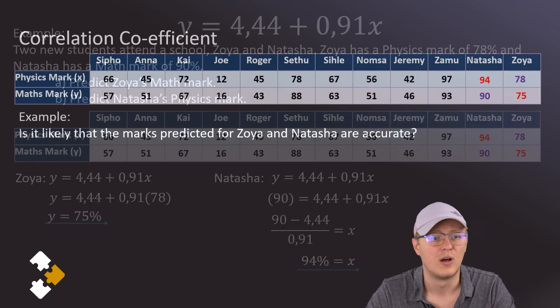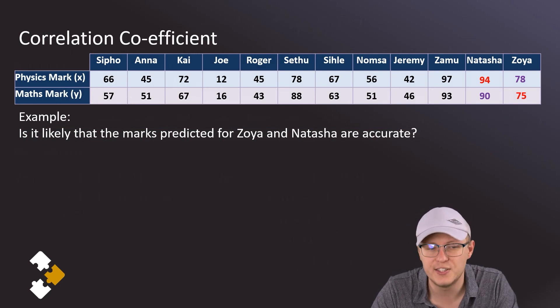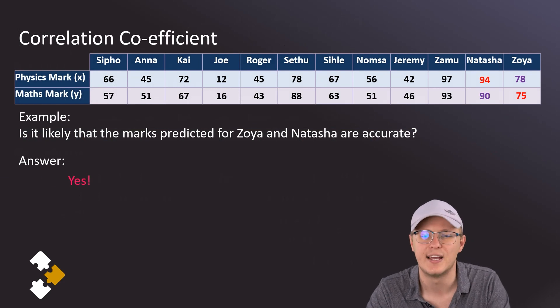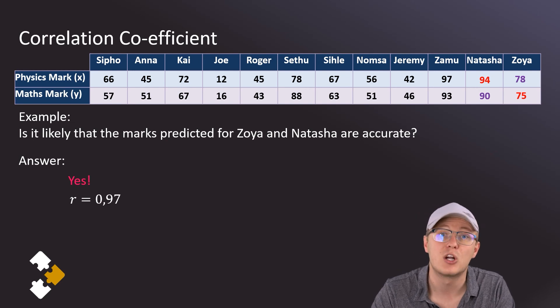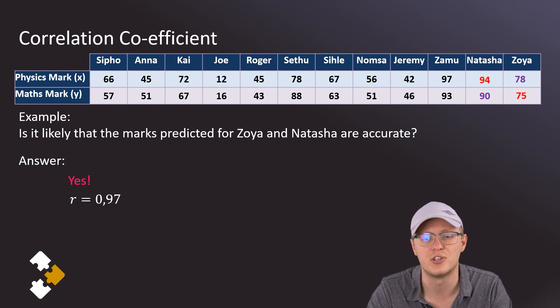Okay, now how does the correlation coefficient tie into this? So the question that we are asked is: is it likely that the marks predicted for Zoya and Natasha are accurate? So is it likely that Natasha who gets 90 for math will get 94 for physics rather than 55 or 60? Well the answer is yes, it is likely. And the reason that it's likely, how we support our answer, is to say the correlation coefficient that we've calculated is 0.97, and that means there's a very strong positive correlation between physics and math.